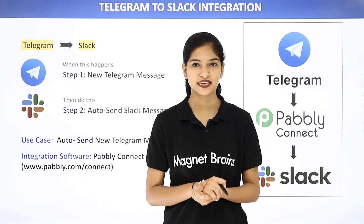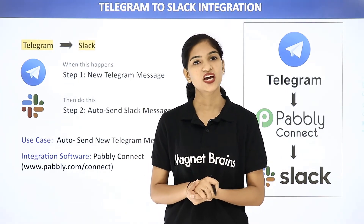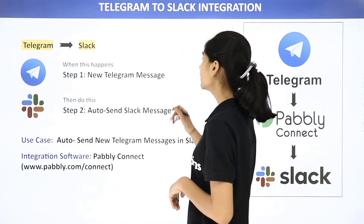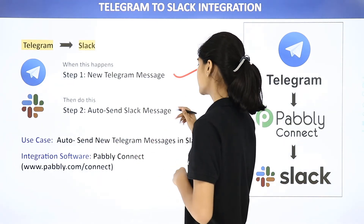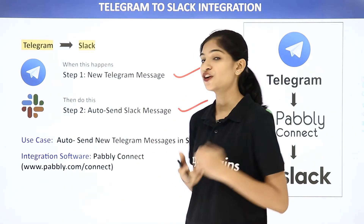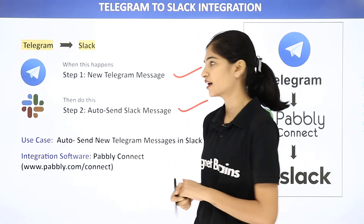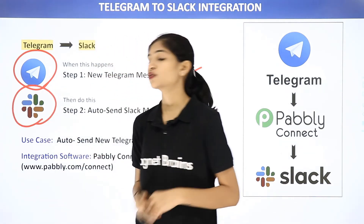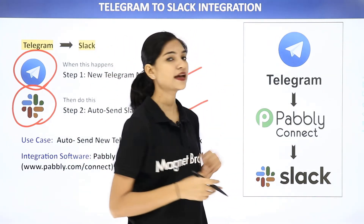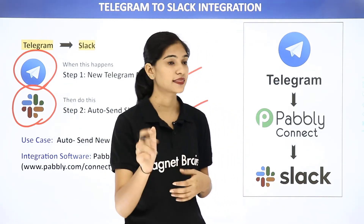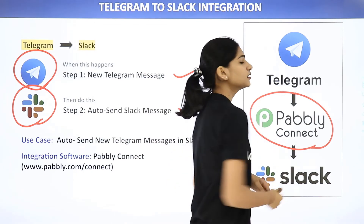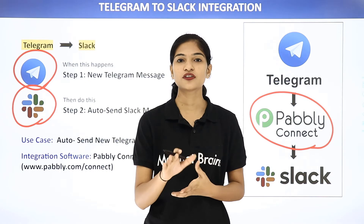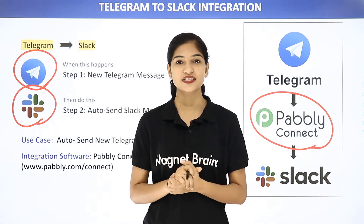Hello everyone, welcome to Pabbly Connect. Today in this video we are going to integrate two software applications, Telegram and Slack. The use case here is whenever there is a new Telegram message, we want to send a message in Slack automatically. Telegram is a messaging software whereas Slack is also a messaging tool. They don't have any integration between them, and that is why we are going to use Pabbly Connect, a third party application, to integrate both. The best part is that you don't require any knowledge of coding.